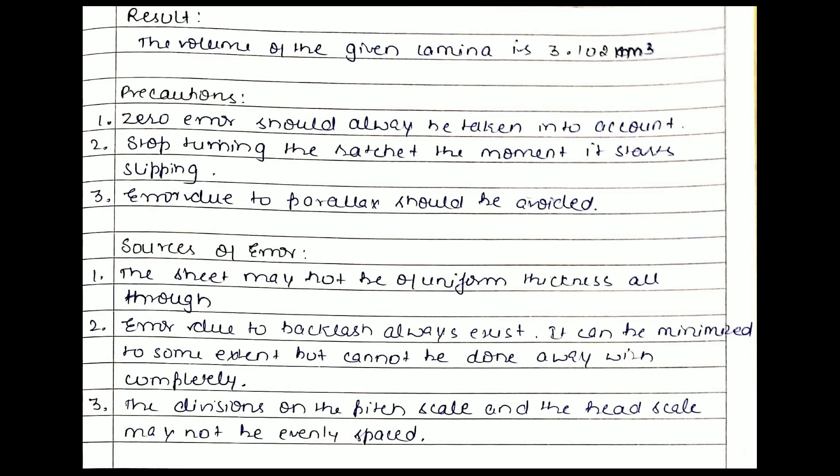The measurement of the thickness of the sheet is done the same way you measure the thickness of the wire — you take the reading five times with the help of a screw gauge. For the measurement of this sheet you can refer to the previous video. The result you get is: the volume of the given lamina is 3.102 centimeter cube.